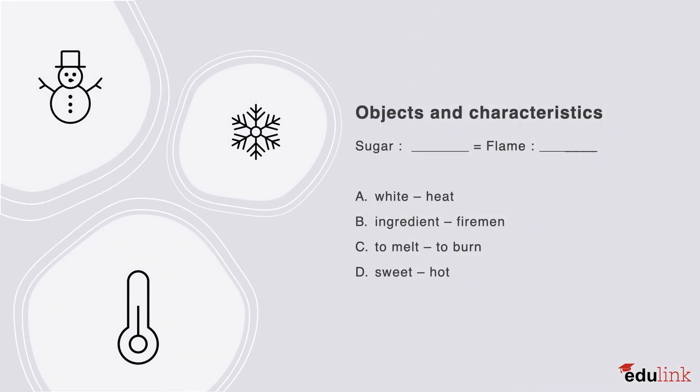Objects and characteristics is the next relation type in question. Read the following options carefully. The correct answer is D. A characteristic of sugar is that it's sweet, and a flame that it's hot.